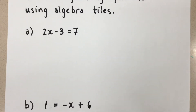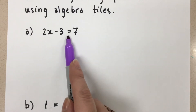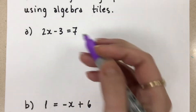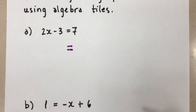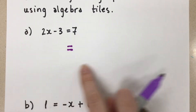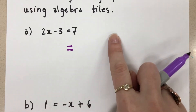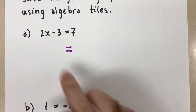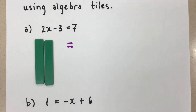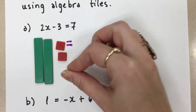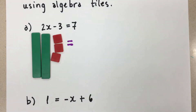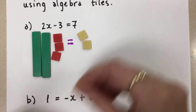Let's look at our first question. An equation means we have an equal sign with an expression on either side. That equal sign needs to remain always in the middle — it doesn't move. On the left side of the equation I have two positive x's and three negative 1's. On the right side of the equation I have positive 7 ones.